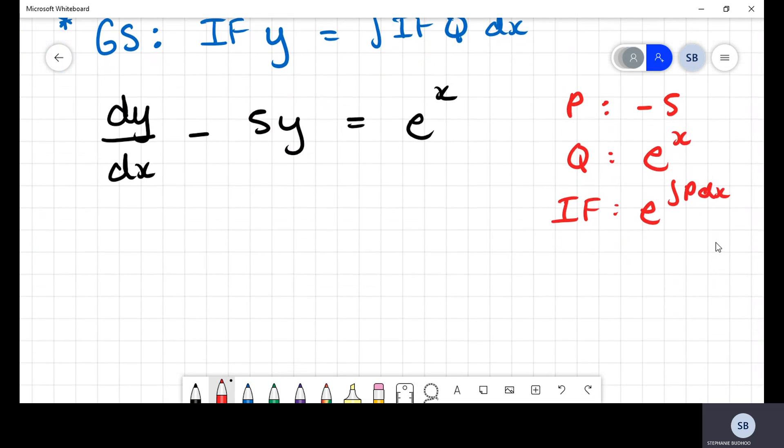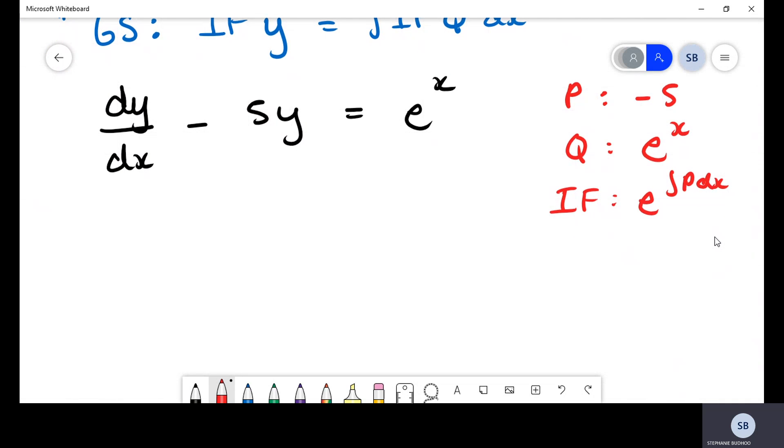We have the value of P, so therefore for this question, our integrating factor is simply equal to e^(∫-5 dx). Now that we have our integrating factor, we're going to get straight into our general solution.